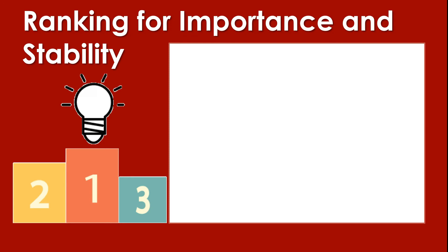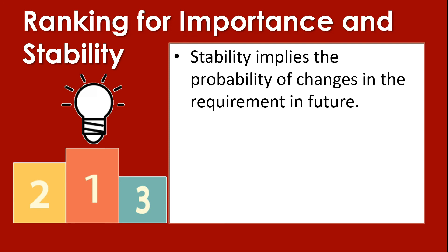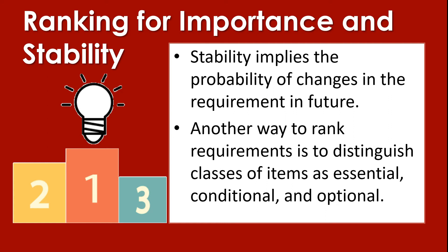The next is ranking for importance and stability. Pag sinabi nating stability, it implies the probability of change in requirement in the future. So there are instances na nagkakaroon ng changes dun sa development ng isang software. So we need to rank the importance ng mga requirements or part ng software for us to identify kung ano yung mas uunahin natin. Another way to rank a requirement is to distinguish the classes of items as essential, mas important pa siya kaysa dun sa ibang part, or the conditions or optional.